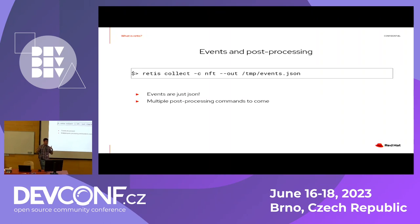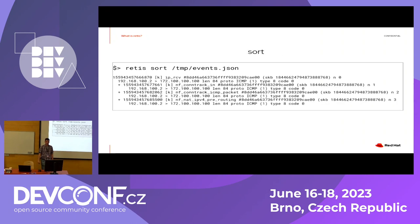Similar to perf, events can be stored in files for easy post-processing. Events are stored as JSON, so you can write your own post-processing in Python or whatever and get more insights. One of the built-in post-processors is the 'sort' command, which I'll show in the live demo.